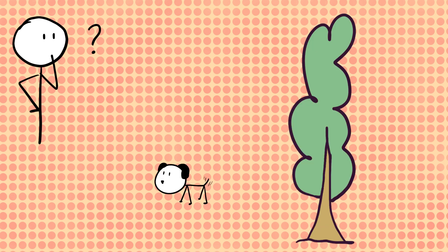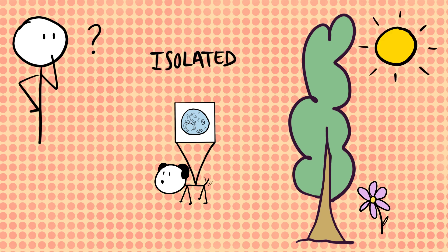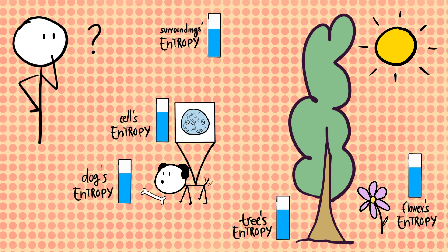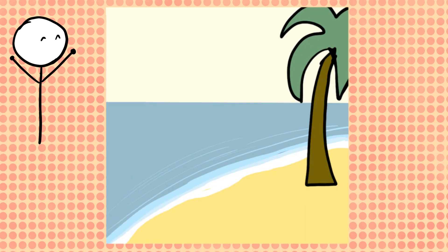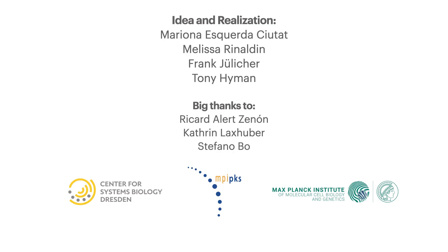This raises a question: why do we see very ordered, complex things like plants, animals, and cells? Well, the tendency to increase entropy applies only to isolated systems. Plants, animals, and cells are not isolated at all. They continuously exchange substances and energy with the surroundings. Living systems exploit this trick to order themselves at the expense of their surroundings. In this way, they manage to create the stunningly complex and interesting structures that we see throughout the living world.